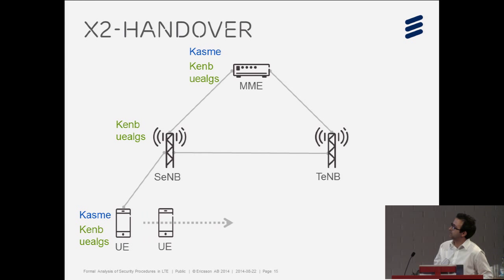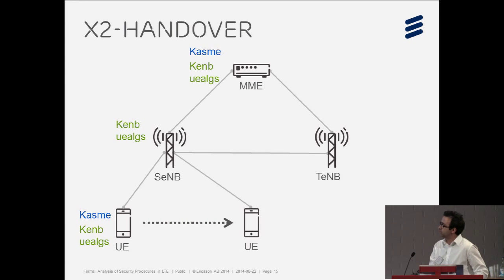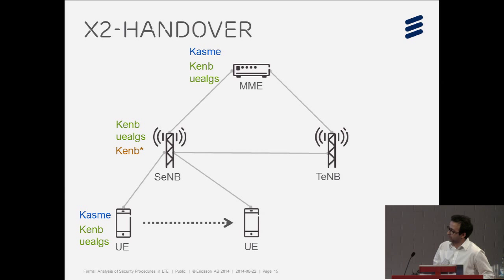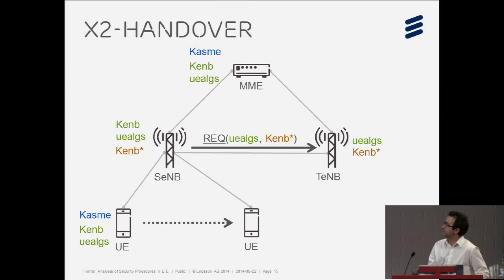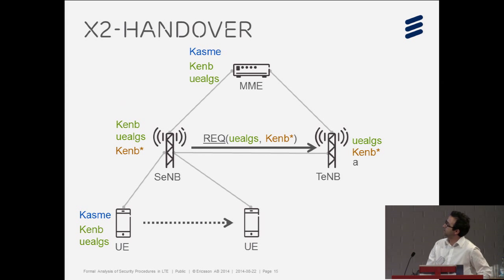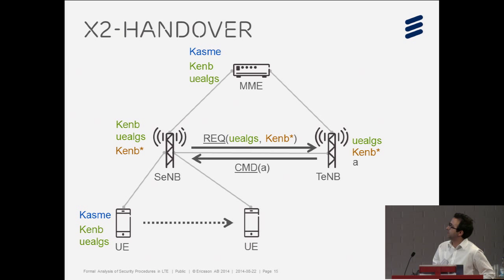What happens is that the user equipment moves away from the source E-NodeB towards a new target E-NodeB. When the source E-NodeB detects that, it derives a new key called Key eNodeB star using its parameters, and sends a handover request message to the target E-NodeB containing those parameters. The target E-NodeB selects one of the capabilities from the set and sends back a handover command reply containing the selected algorithm, which the source E-NodeB forwards to the user equipment.